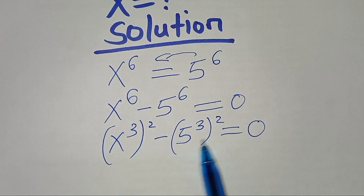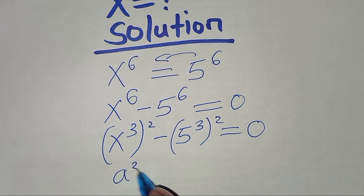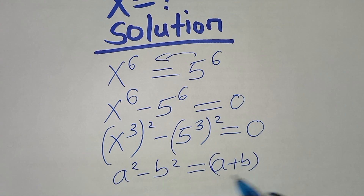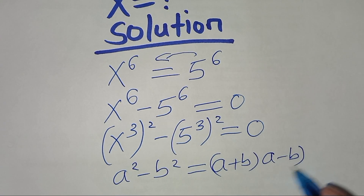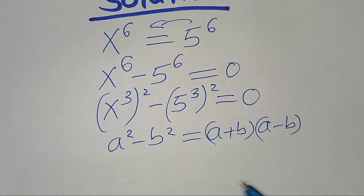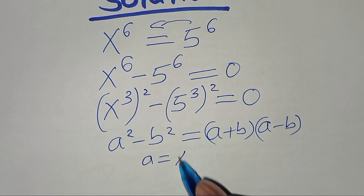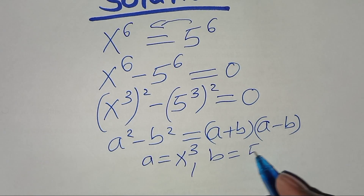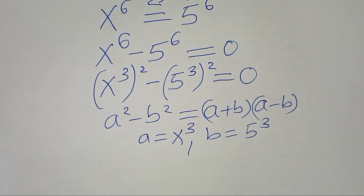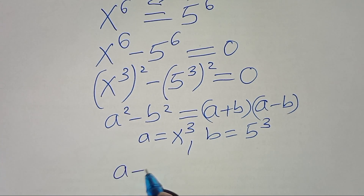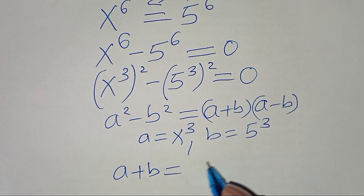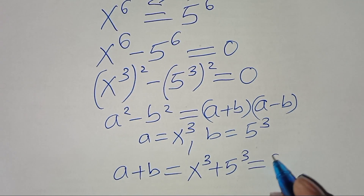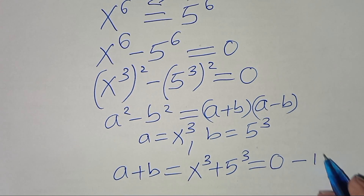This is in the form of a squared minus b squared, which can be expressed as (a + b)(a - b). Here a equals x to power 3 and b equals 5 to power 3. So we get (x³ + 5³)(x³ - 5³) = 0. The first factor gives us x to power 3 plus 5 to power 3 equals 0 — let's call this equation 1.